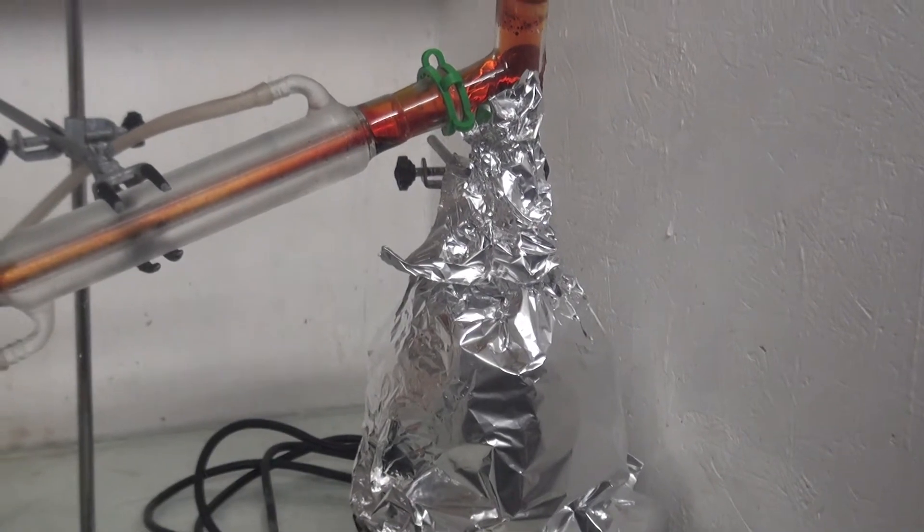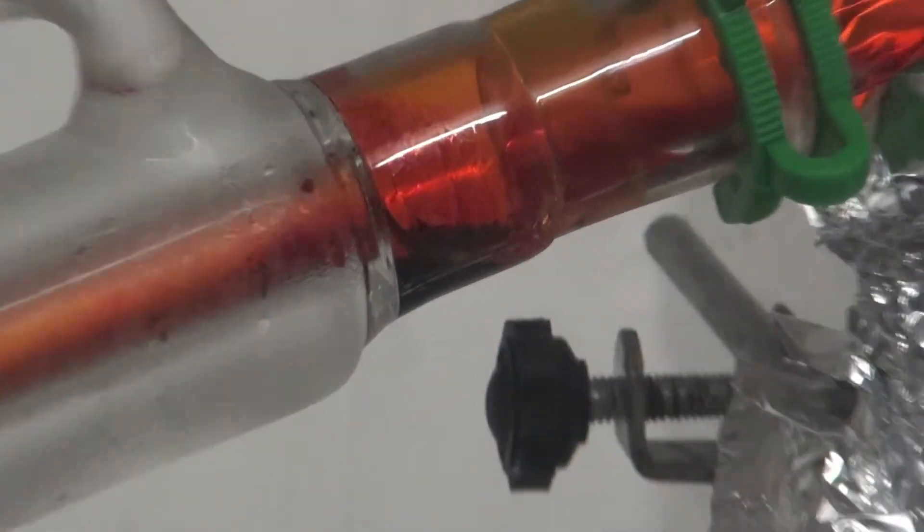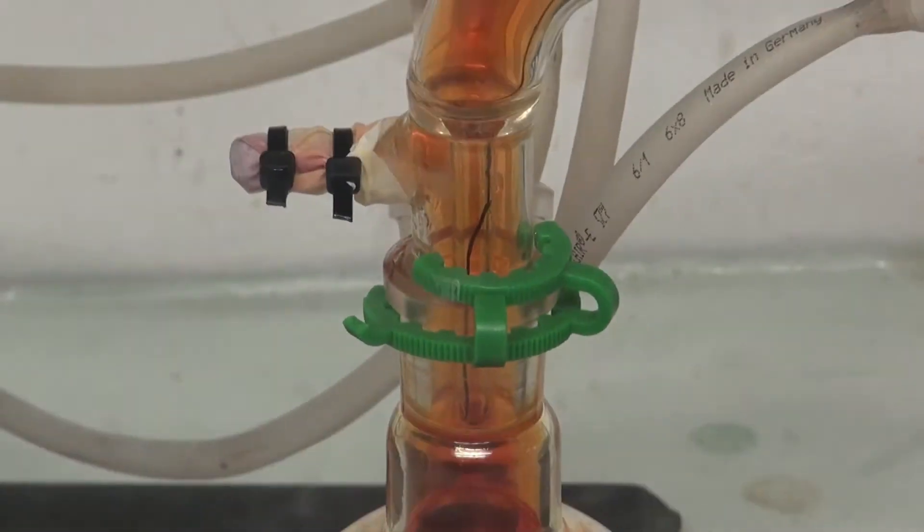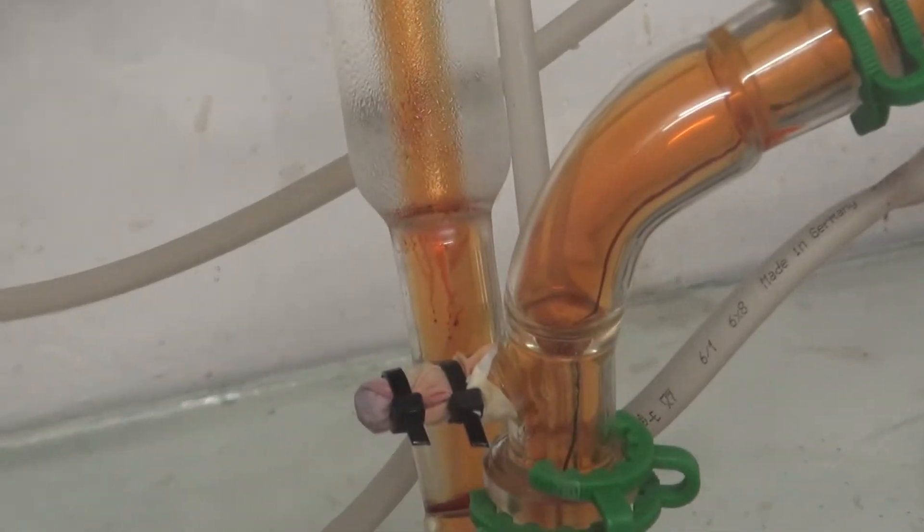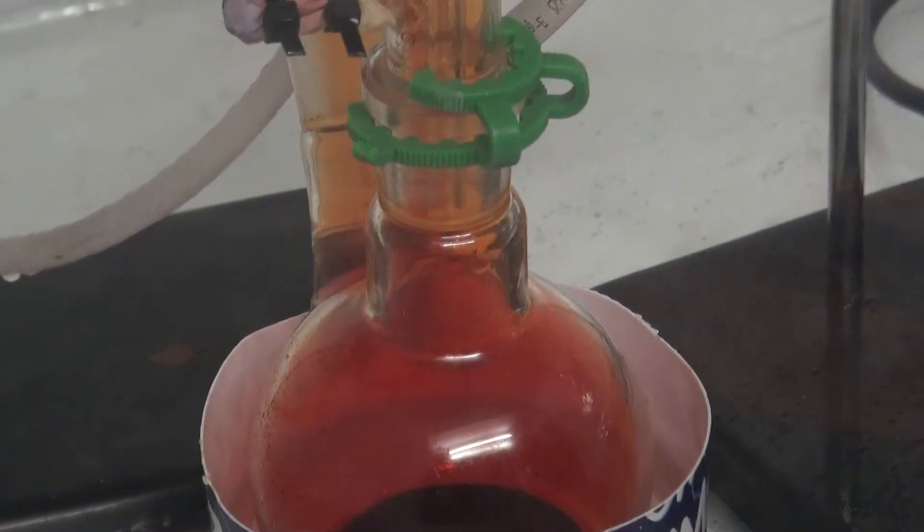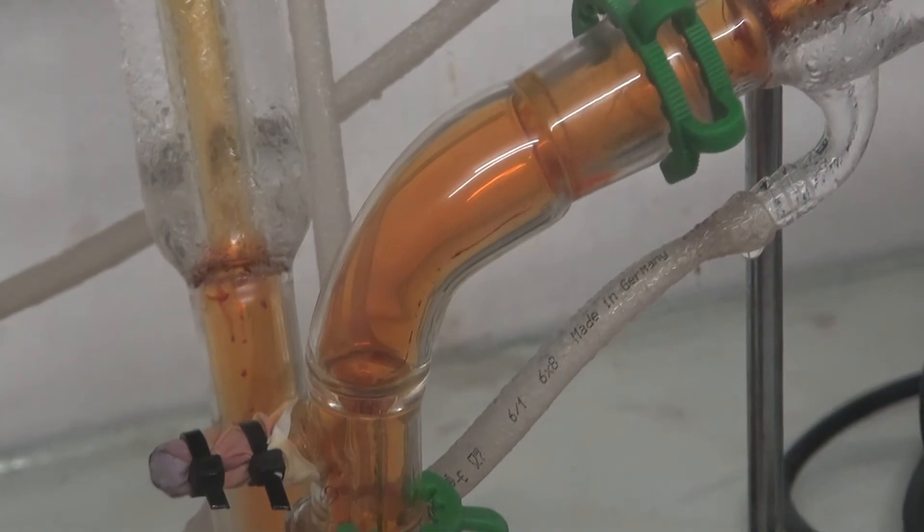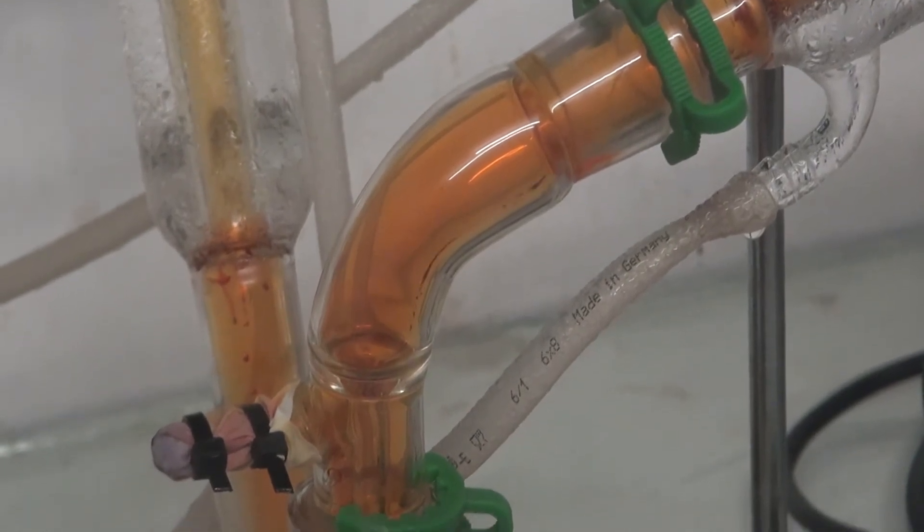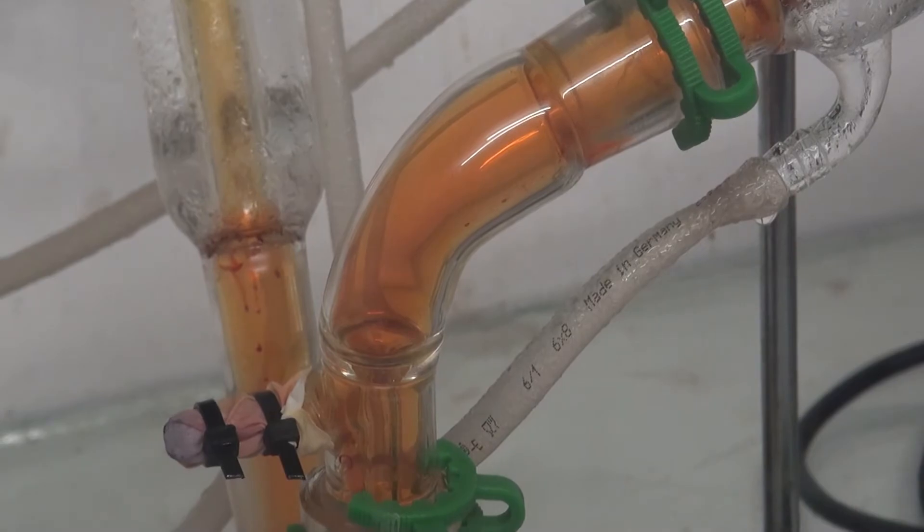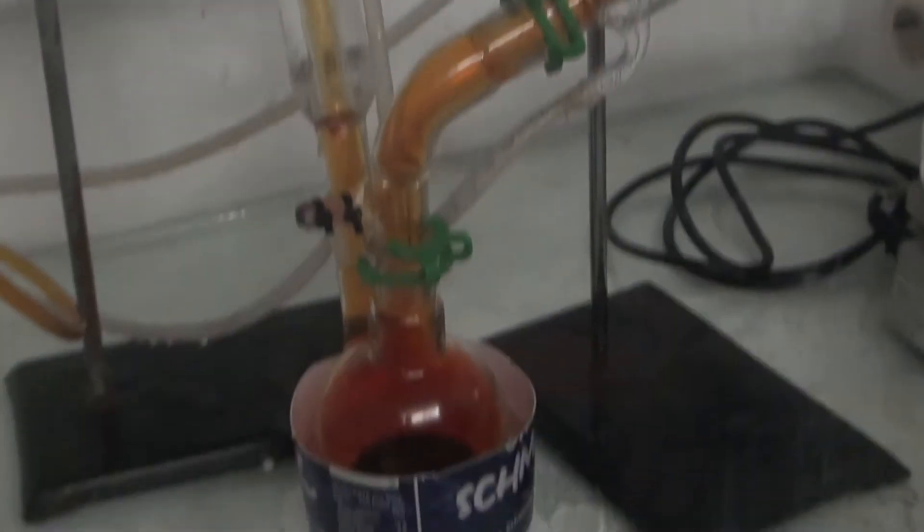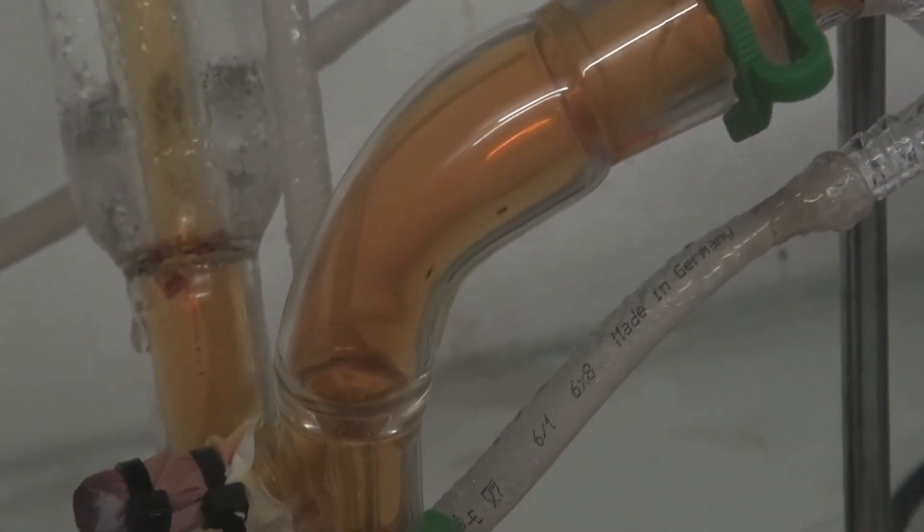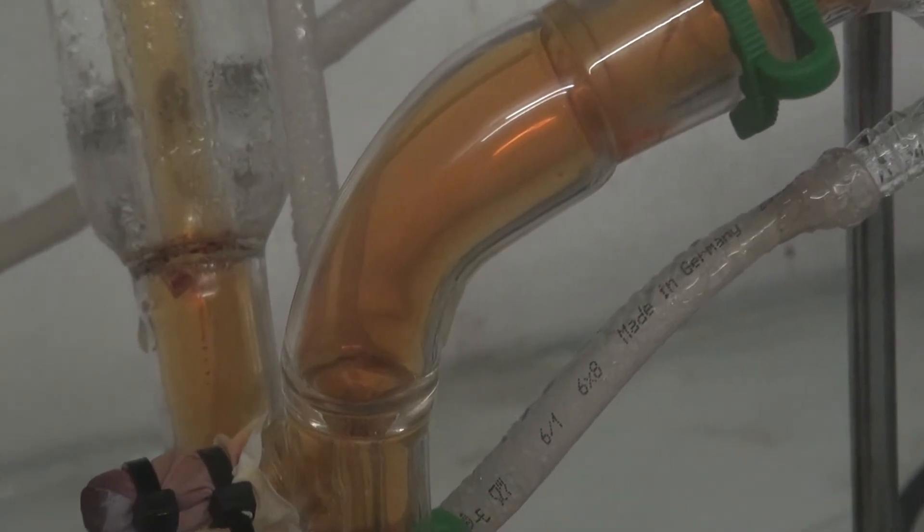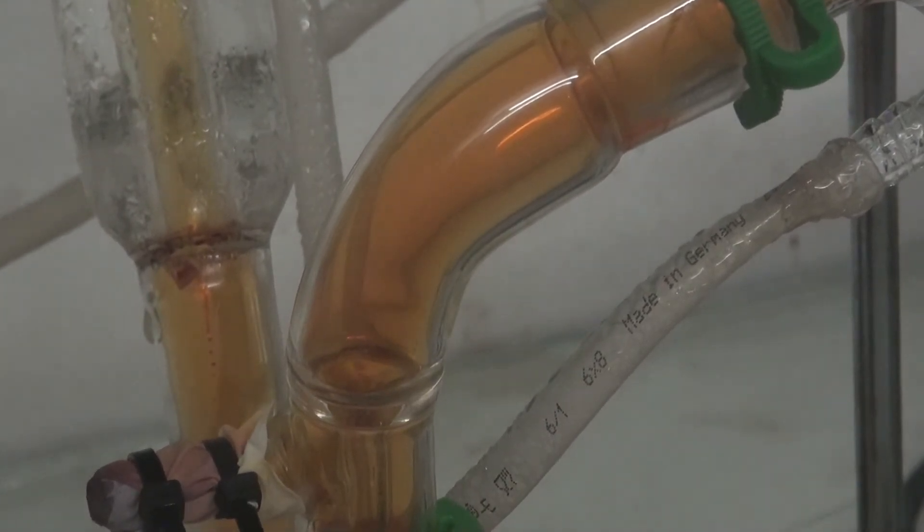The solution was heated and insulated with aluminum foil. After 3 hours no more bromine came over and the apparatus was disassembled.